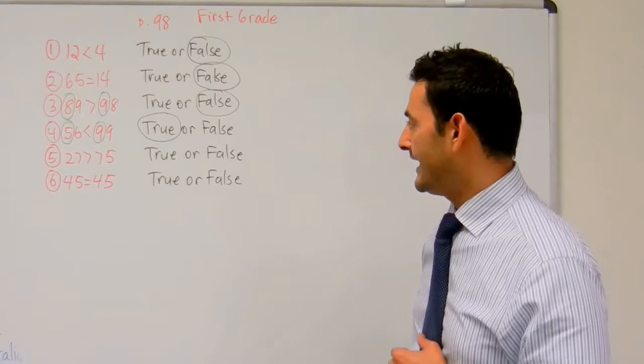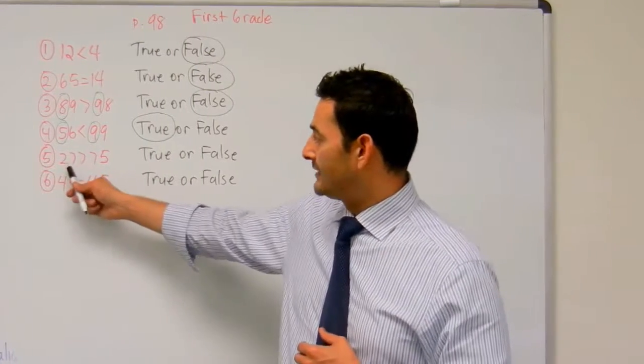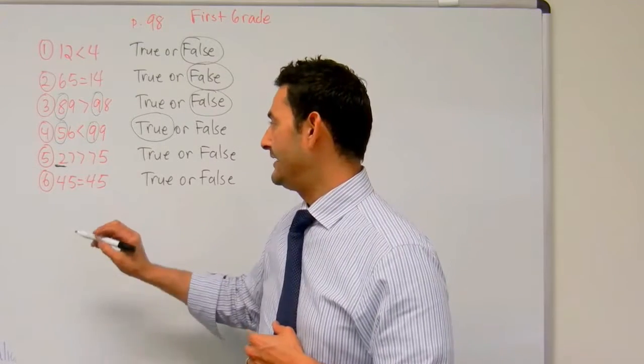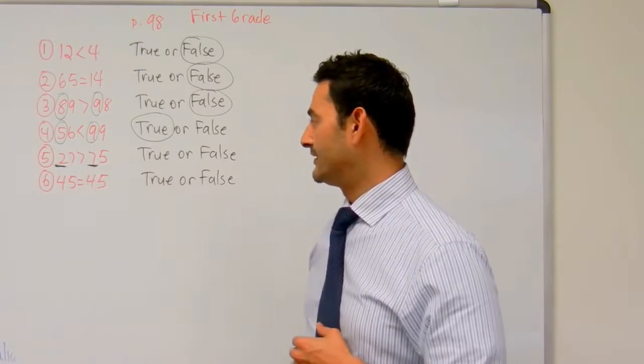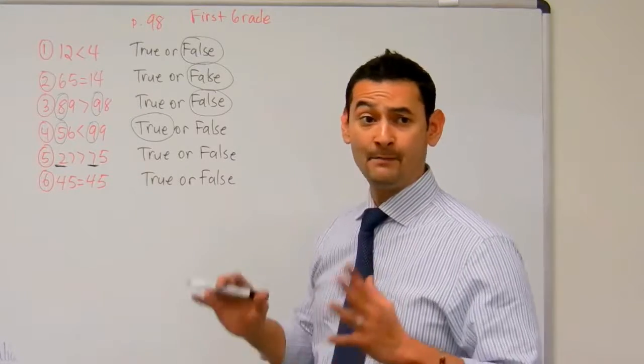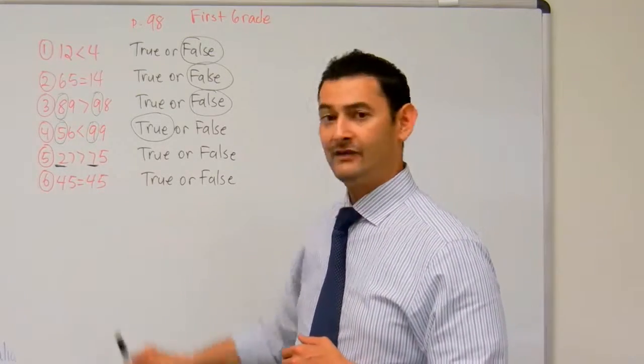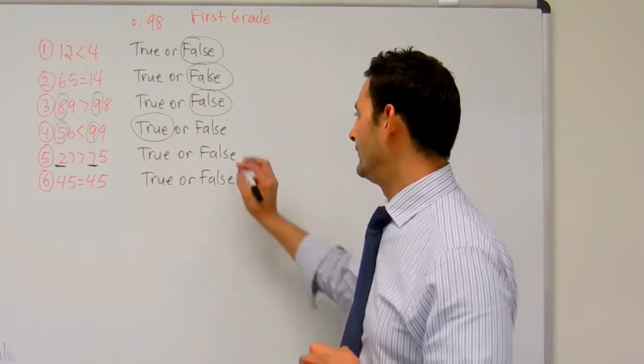Now let's take a look at number 5. Here I've got 27 is greater than 75. Here I've got 2 bundles of 10. Here I've got 7 bundles of 10. 75 is bigger. It's greater. So 27 is greater than 75? I don't think so. That's false.